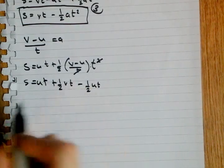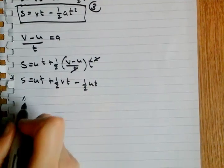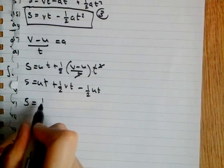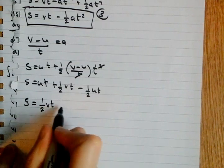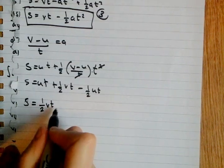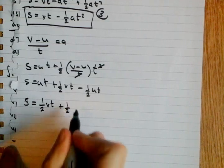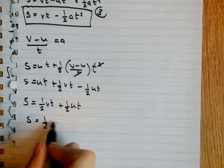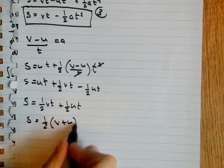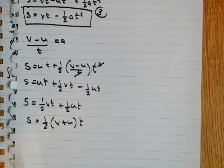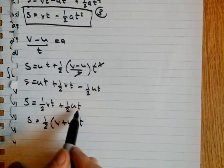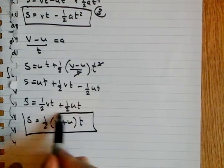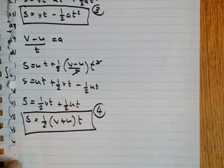plus a half VT minus a half UT. We've got UT minus a half UT. Let's just take a second to look at that. If you don't know where it comes from, all I've done is put the V and U in a bracket because they're multiplied by the same thing. And there's our fourth equation.